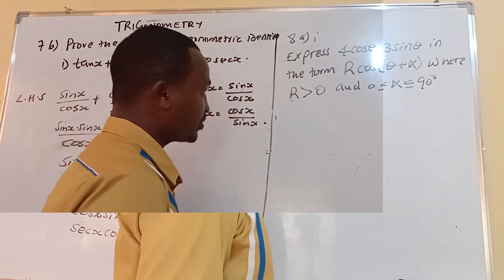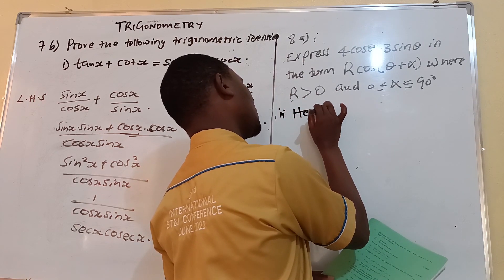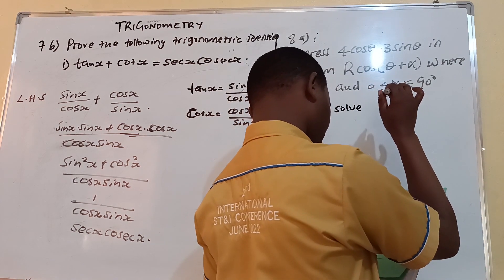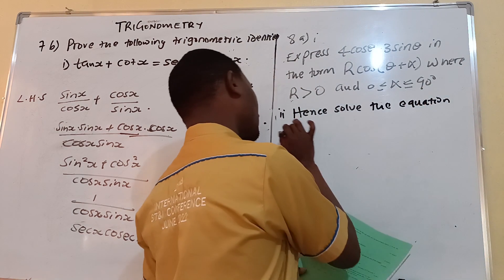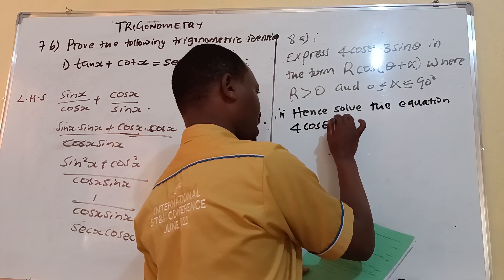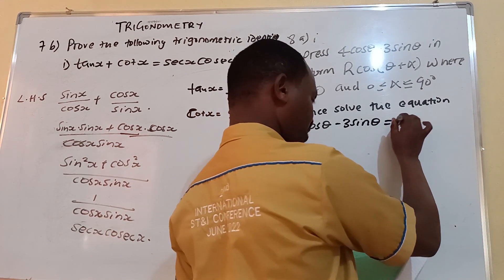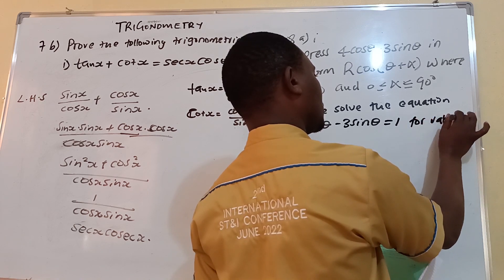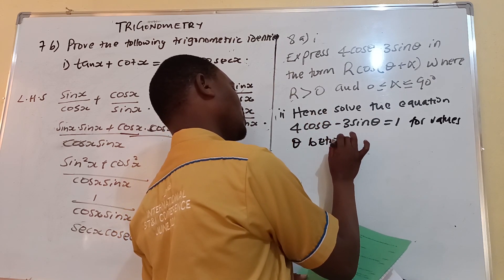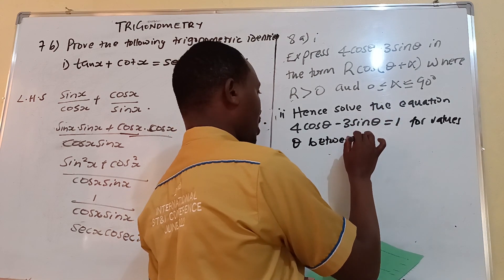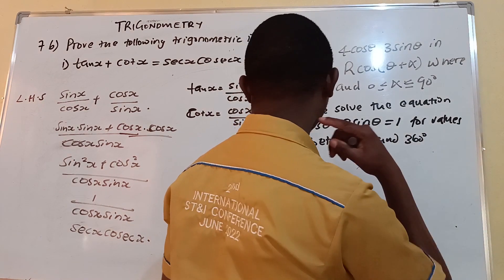You are also told, Roman numeral 2: hence solve the equation 4 cos theta minus 3 sin theta equals 1, for values of theta between 0 degrees and 360 degrees.